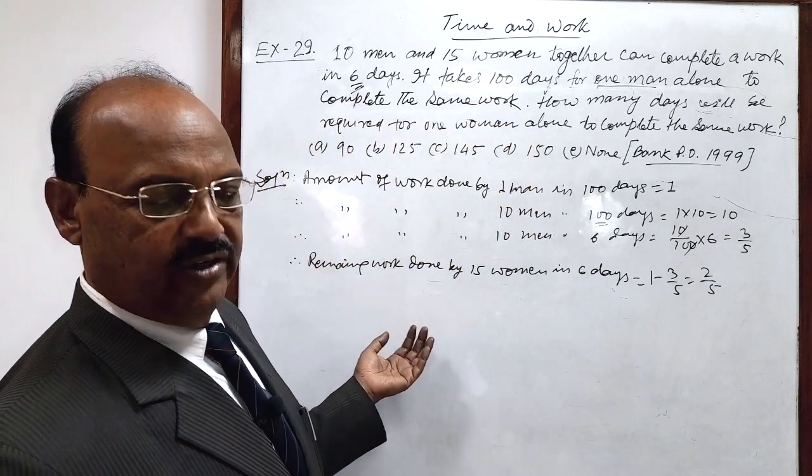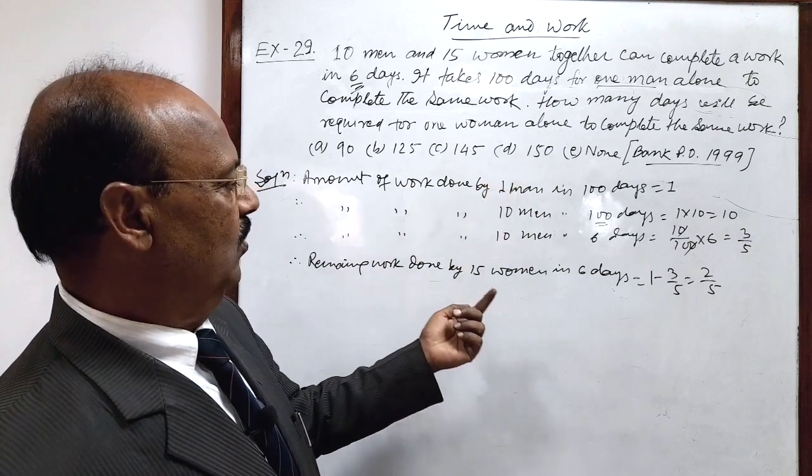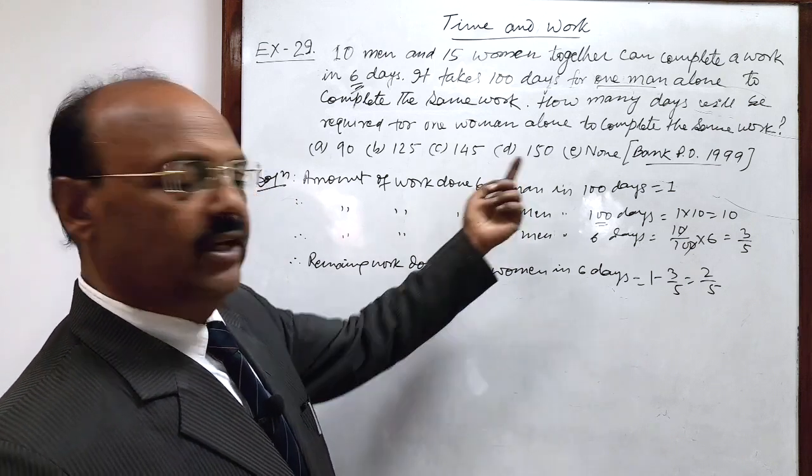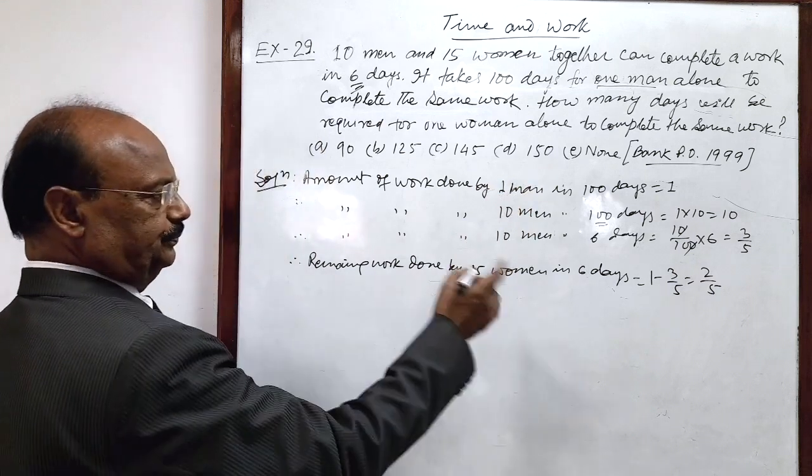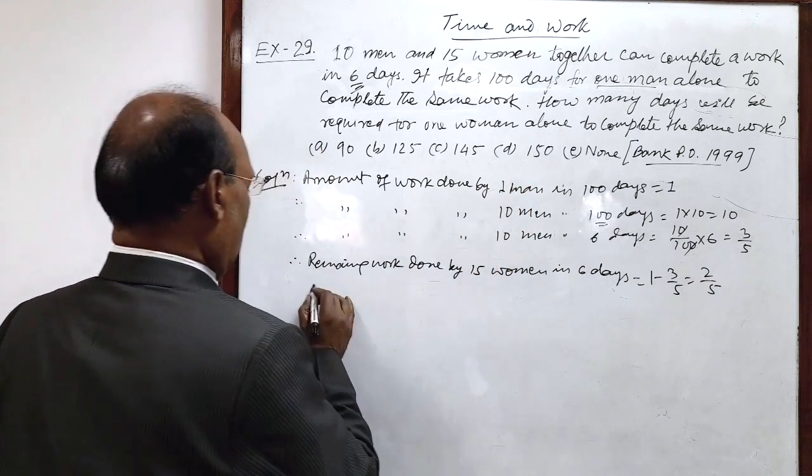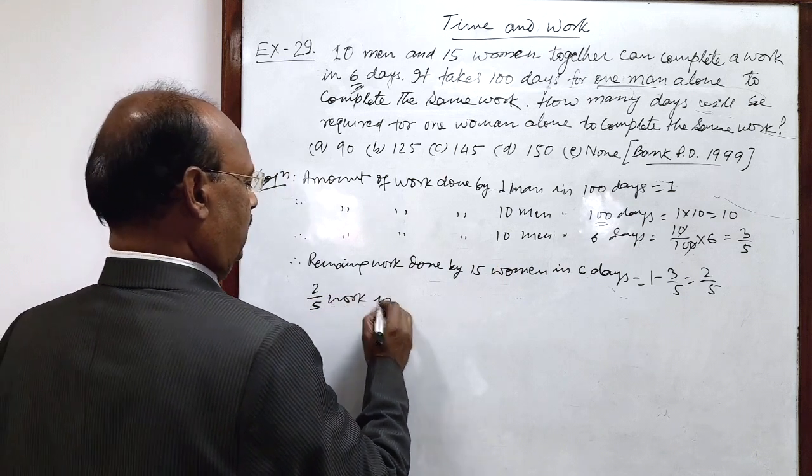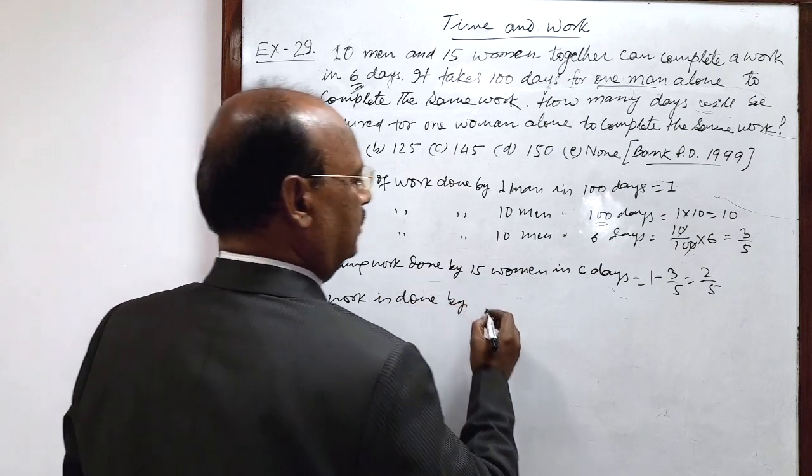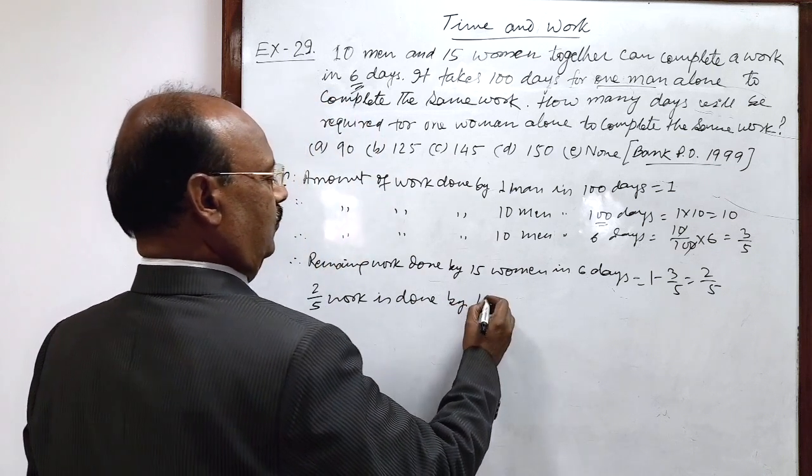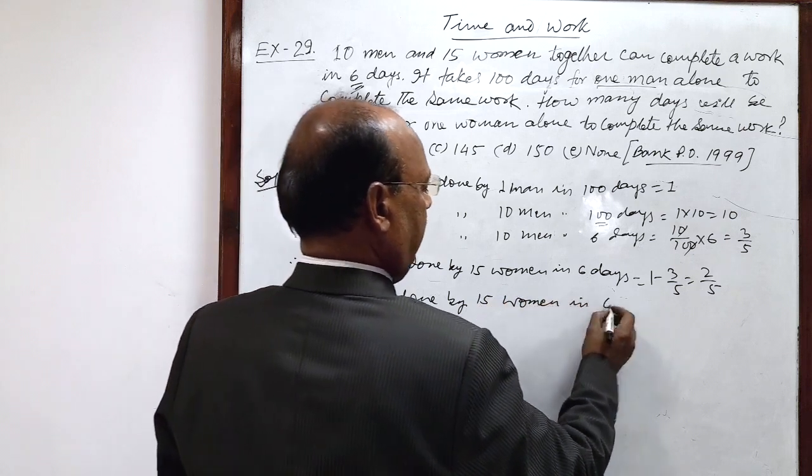Now we need to find out number of days required to do this same job by 1 woman. OK, so let us write here: 2 by 5 work is done by 15 women in 6 days.